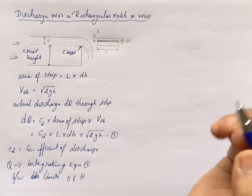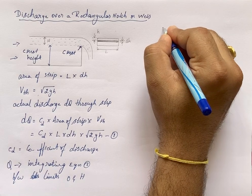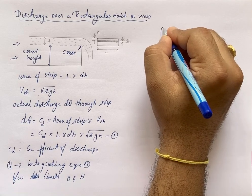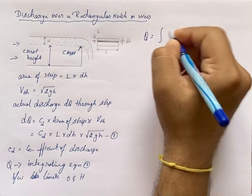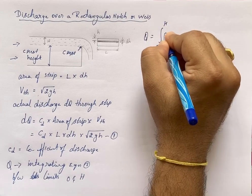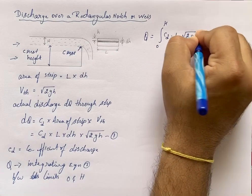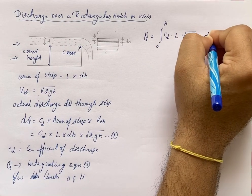Between the limits we need to integrate equation 1. On integrating equation 1, integration of Q equals integration from 0 to H of Cd × L × √(2gH) × dH.